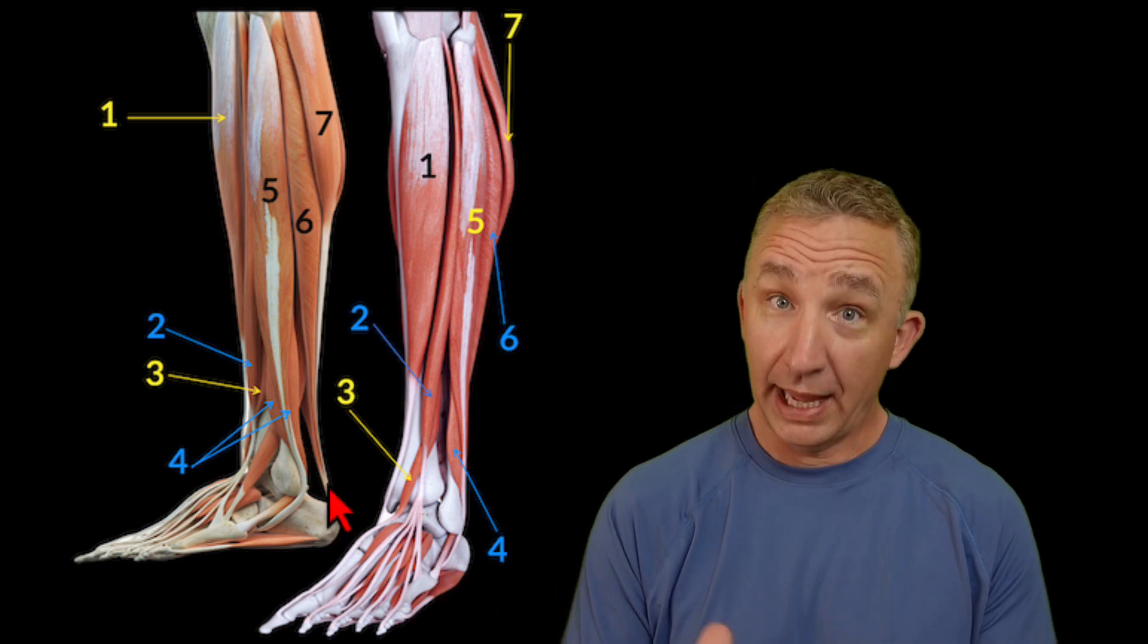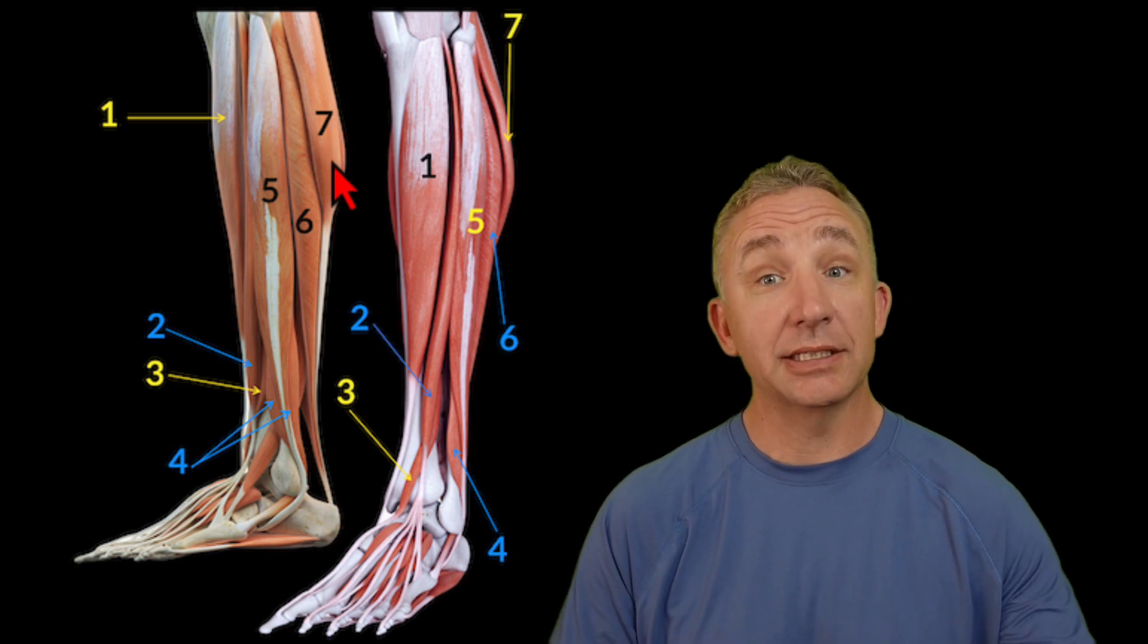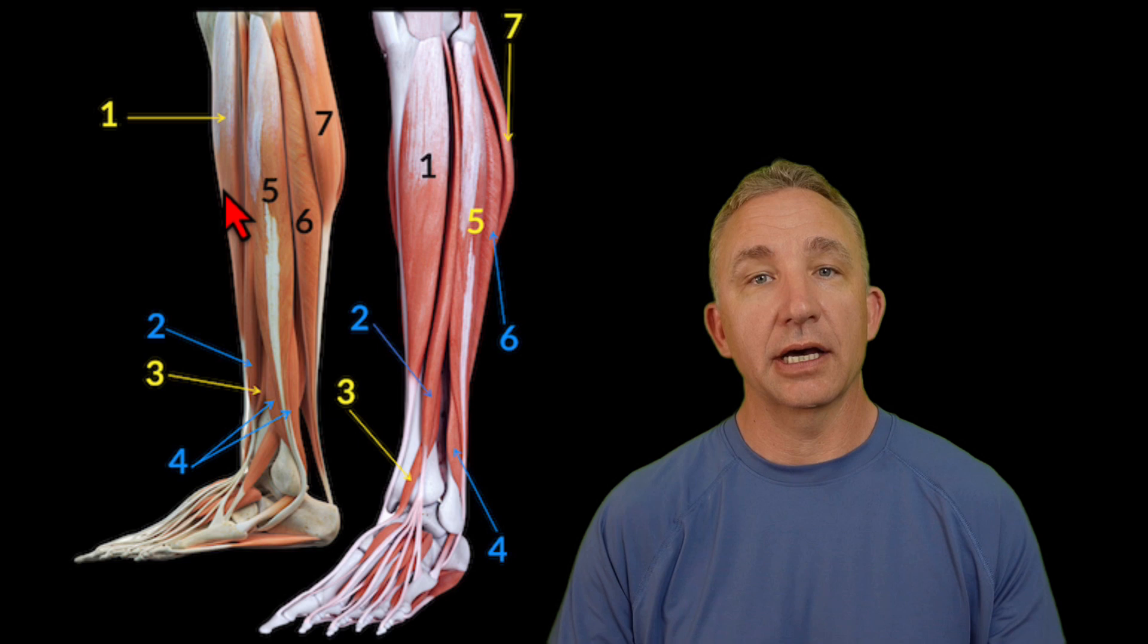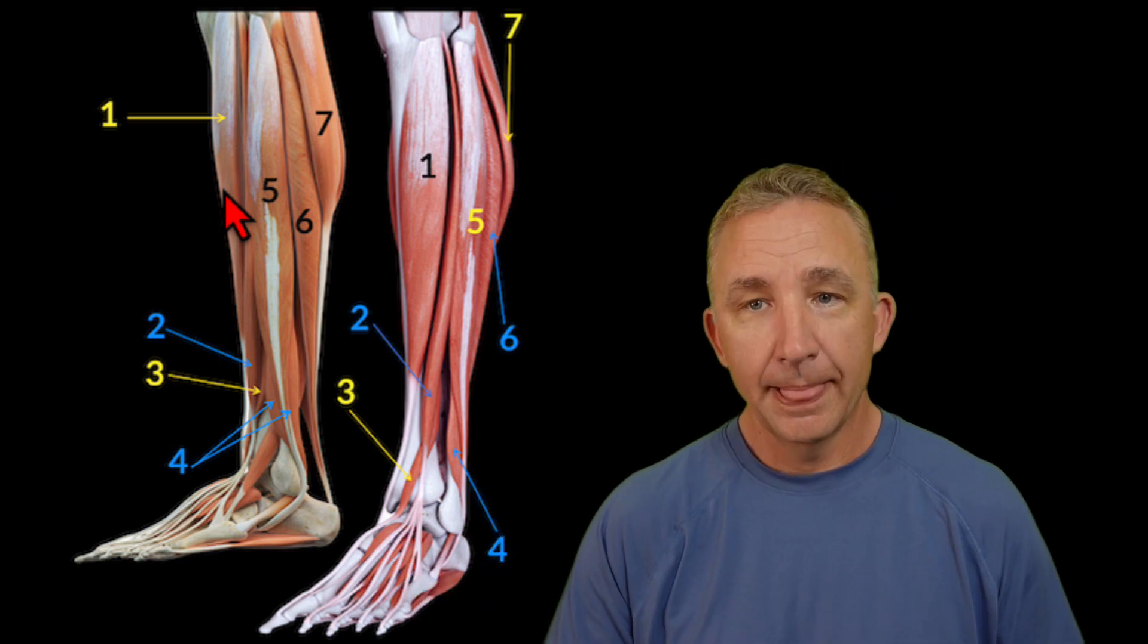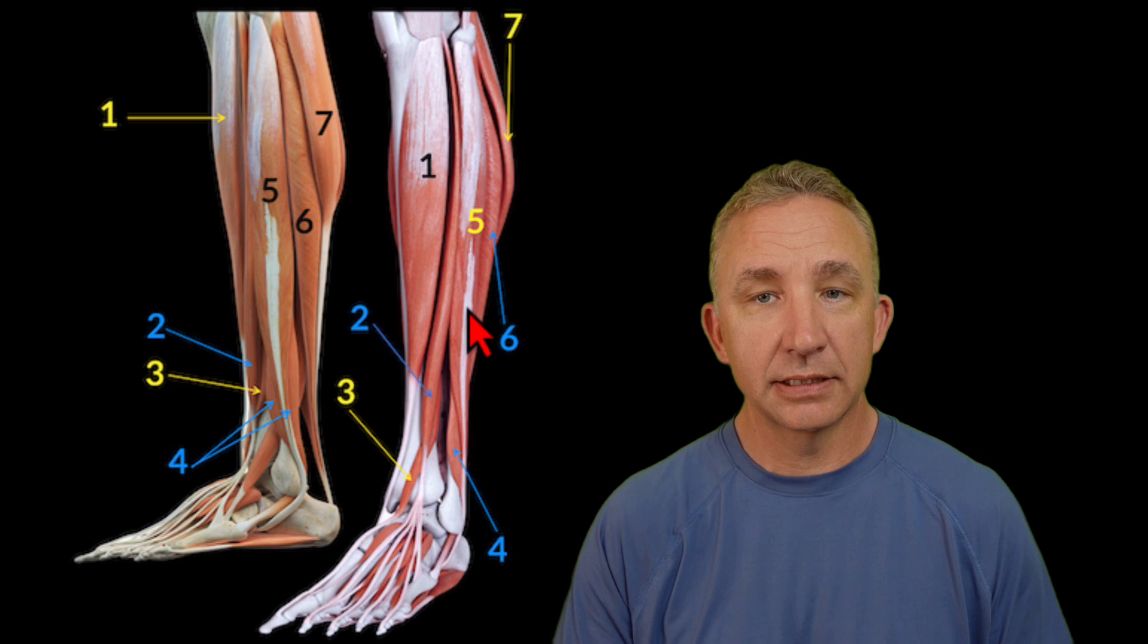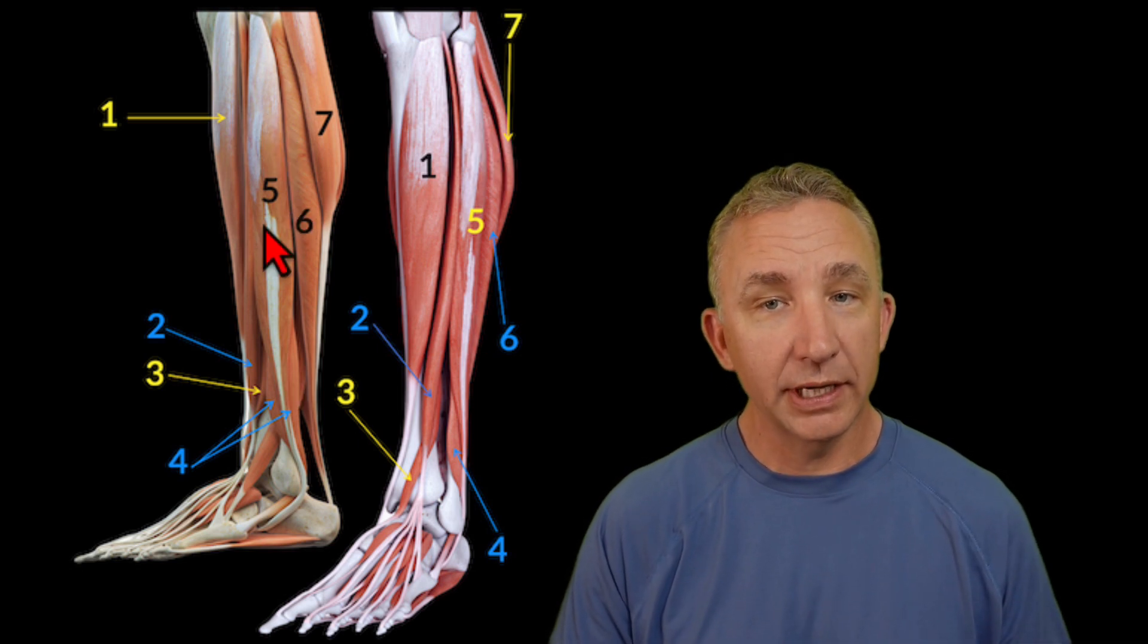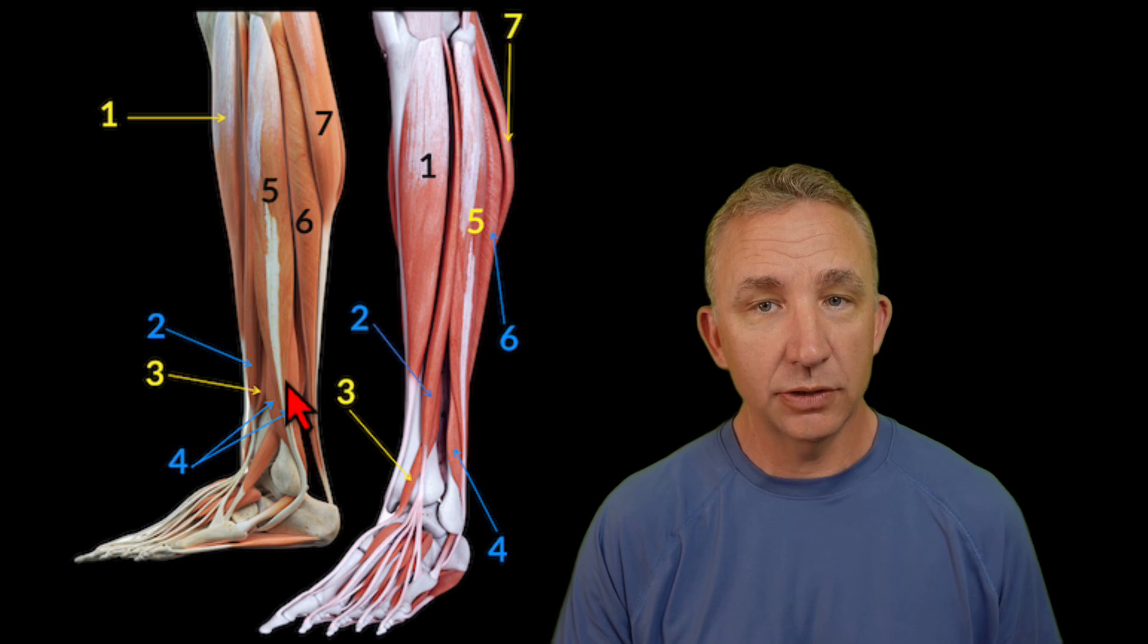What are we trying to do? Plantar flexion, which is up on my tiptoes. So I use the posterior side for my tiptoes, the anterior side I'm using to roll back on my heels. And then on the lateral side, so I have four and five, the long one here with this tendon attached to it.